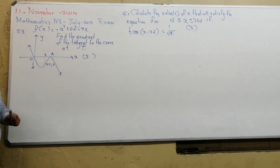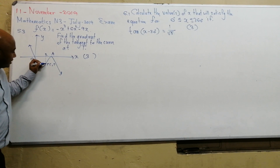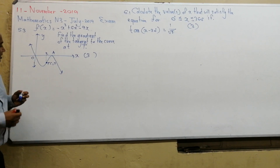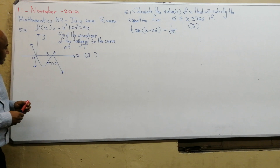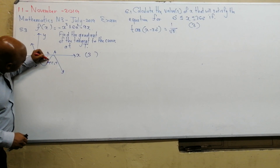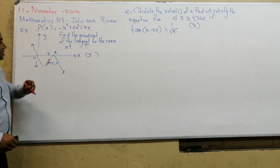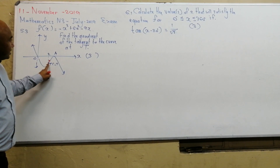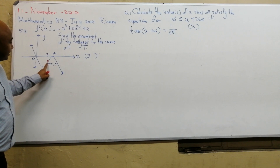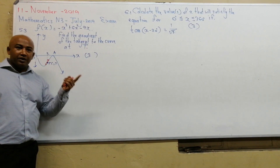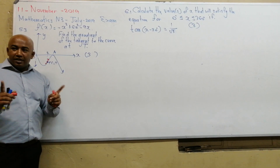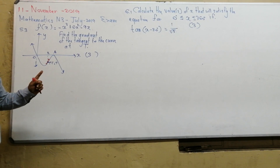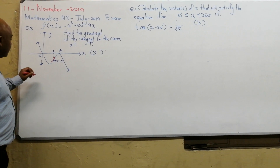We are given a point on the graph — point C — and we need to find the gradient of the tangent. So if you draw a tangent to this curve at this point, you want to know the gradient of that tangent. Now, we do not have two points on the graph; we only have one point, so we cannot use change in y over change in x — that would be the average gradient. We want the gradient at a specific point.